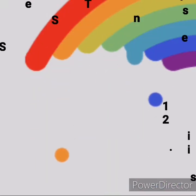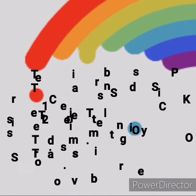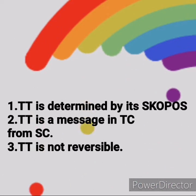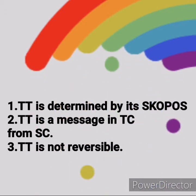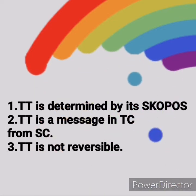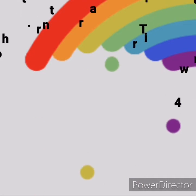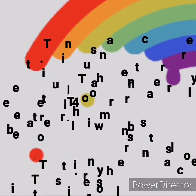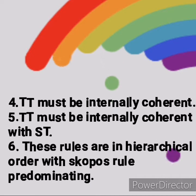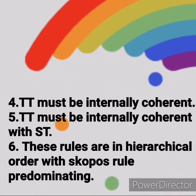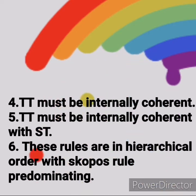Skopos Theory follows six basic rules. Number one, a translated text is determined by its skopos. Number two, a translated text is a message in a target culture concerning a message in a source culture. Number three, a translated text is not clearly reversible. Four, a translated text must be internally coherent. Five, a translated text must be internally coherent with the source text. And last, the rules above stand in hierarchical order with the skopos rule predominating.